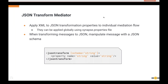Another addition to the Micro-Integrator runtime is the JSON Transform mediator. Using it, users can apply XML-to-JSON transformation properties to individual artifacts. In previous versions, we had a synapse.properties file where properties like JSON auto-primitive were applied globally across all artifacts. Now with the JSON Transform mediator, you can override these properties for a specific artifact during a mediation flow. You can also write a JSON schema, store it in the registry, and refer to it during mediation to manipulate the JSON payload according to the schema.